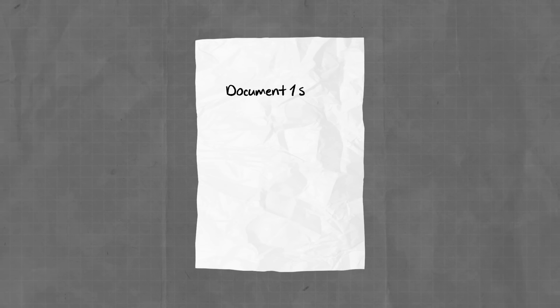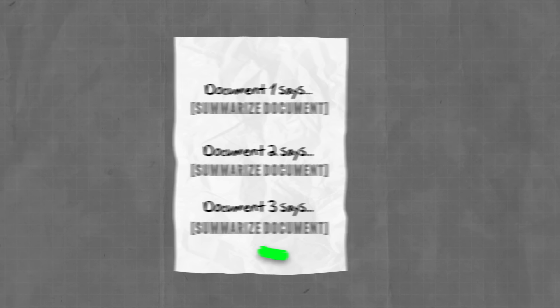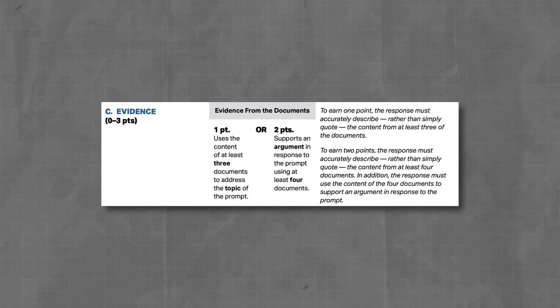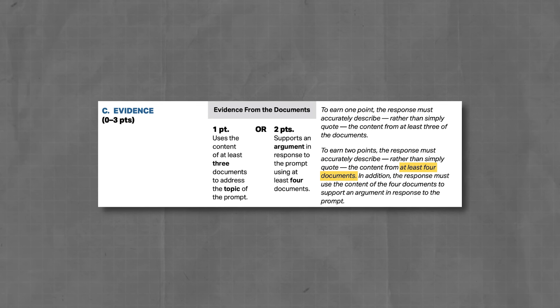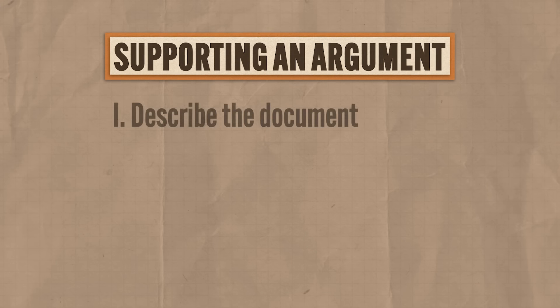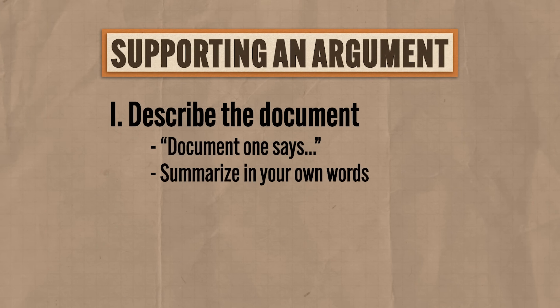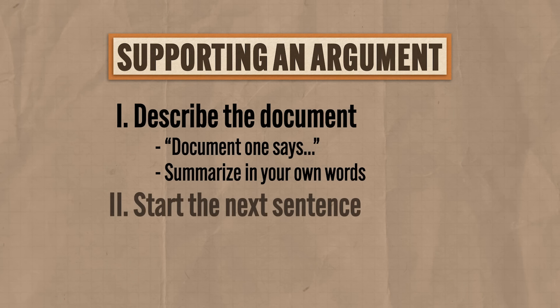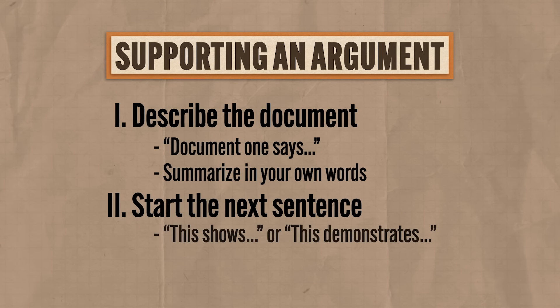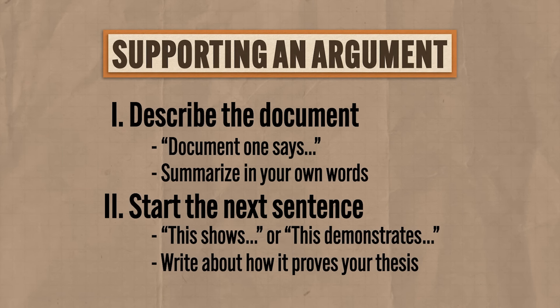Describing a document is exactly what it sounds like — you summarize that document accurately. If you do that three times, one point. But you're here for full points. To use documents to support an argument, first describe the document, summarize it in your own words, and then begin the next sentence with 'This shows' or 'This demonstrates,' and write about how that document proves your thesis. You always need to tie your evidence back to your thesis.